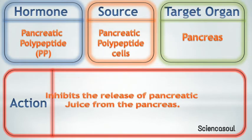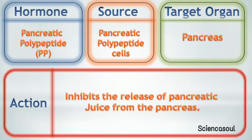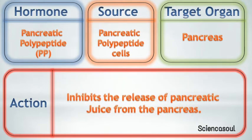Tenth hormone is pancreatic polypeptide, PP. Source of PP are pancreatic polypeptide cells. Target organ of PP is the pancreas. Action of PP is to inhibit the release of pancreatic juice from the pancreas.